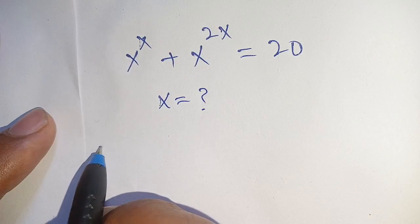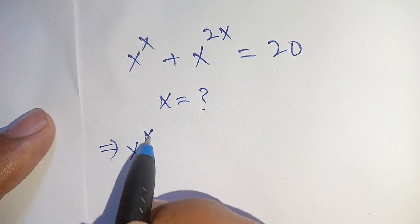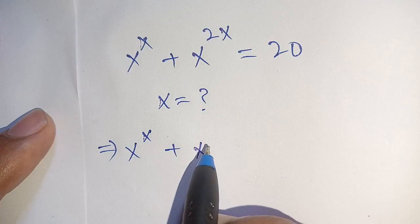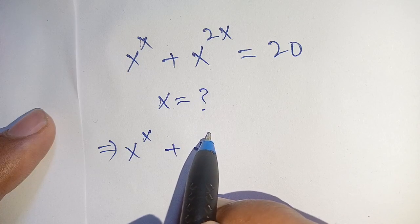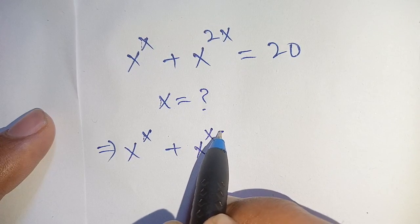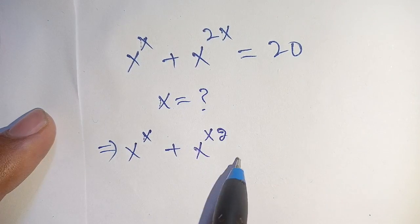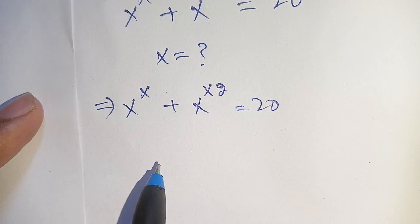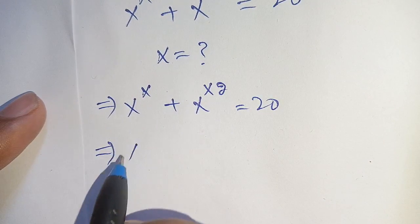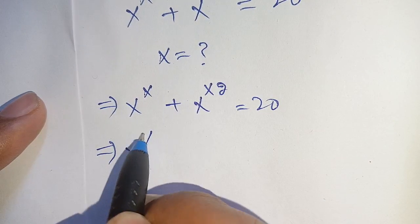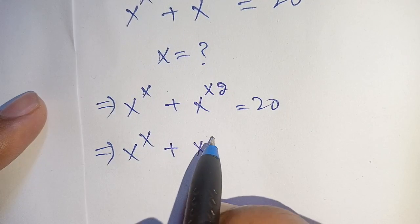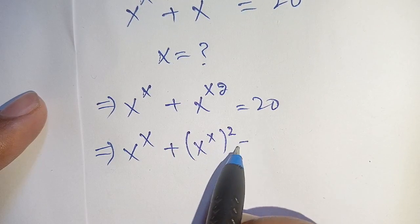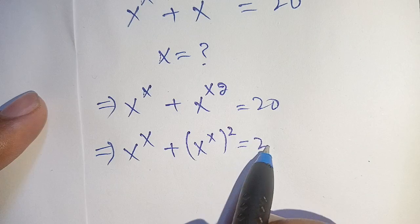We can write this as x power x plus x power 2x, which can be written as x power x plus x power x, bracket power 2, is equal to 20.